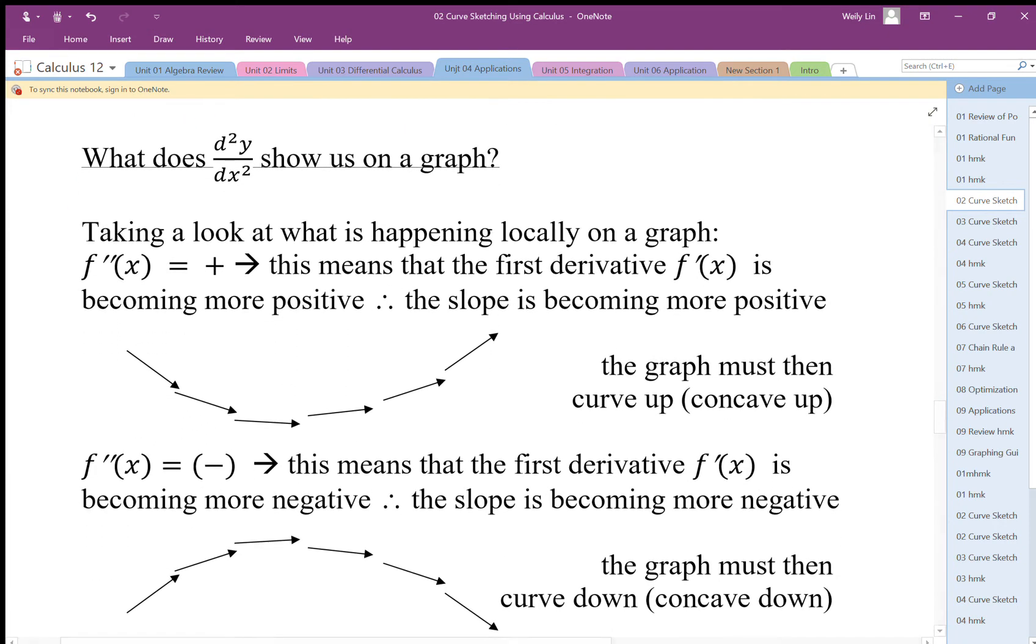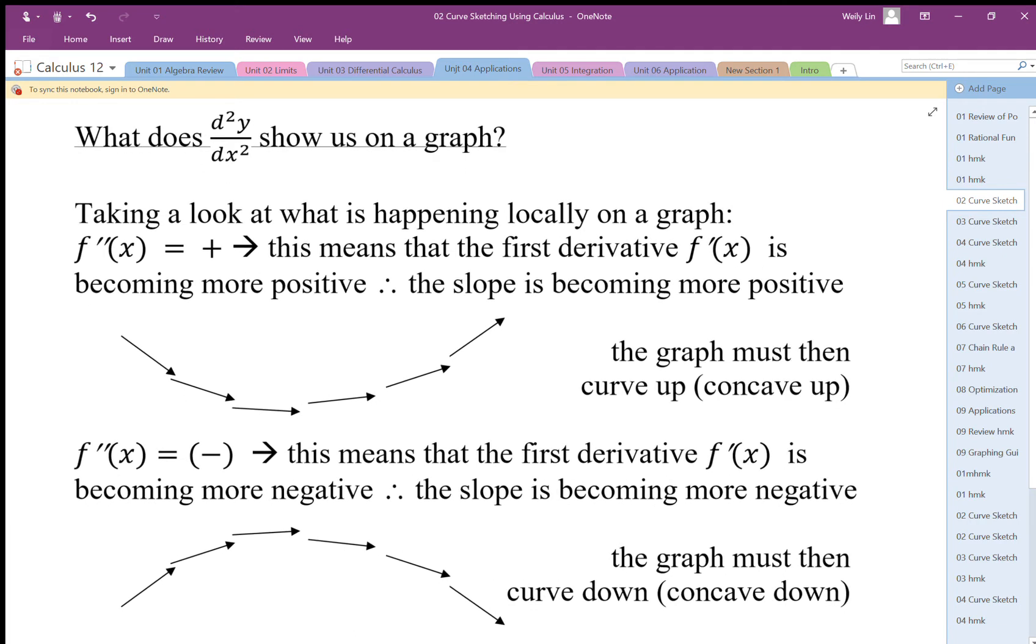Okay, so looking at the second derivative, what does it show? It shows us concavity. The second derivative is the change of change, or change of slope. The second derivative being positive means that the first derivative, the slope, is becoming more positive or increasing.